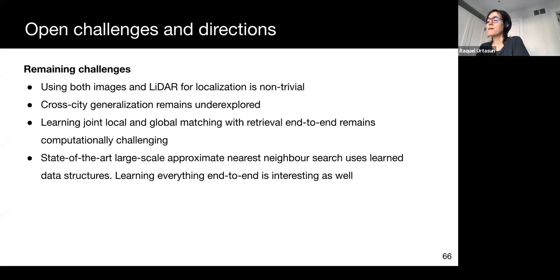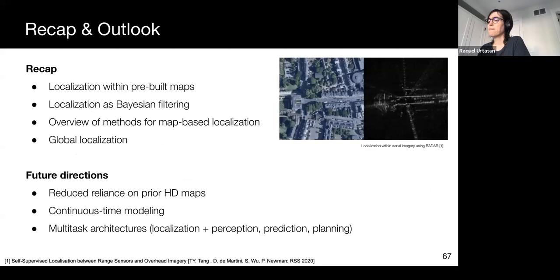Training these two things together remains challenging. Finally, state-of-the-art indexing systems for approximate nearest neighbor search rely on data structures that are themselves learned. So, jointly learning to localize globally and efficiently finding nearest neighbors would be an interesting area of research as well.